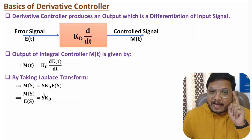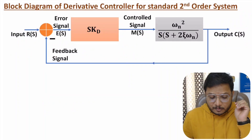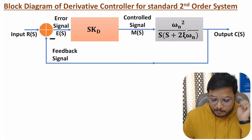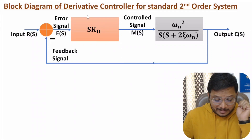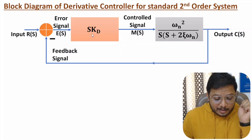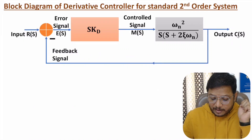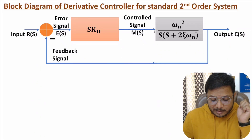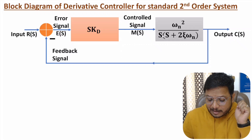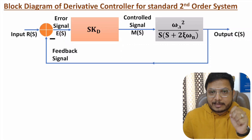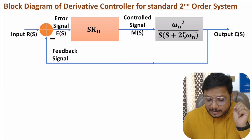Now I will explain the derivative controller with a standard second order system. We have a control system with unity negative feedback. The controller is a derivative controller with transfer function s × Kd. The error signal — the difference between R(s) and C(s) — is fed to the derivative controller, producing controlled signal M(s), which is fed to the standard second order system: ωn² / (s(s + 2ζωn)), where ωn is the natural resonance frequency and ζ is the damping constant.